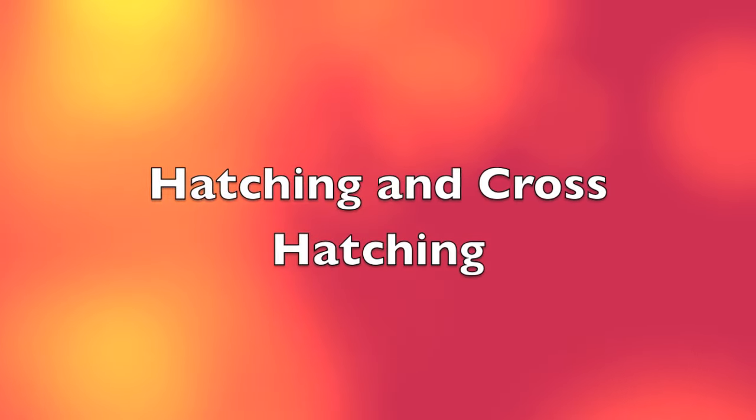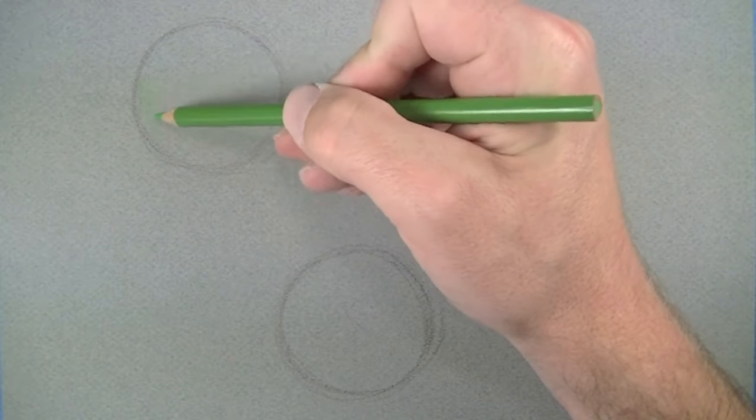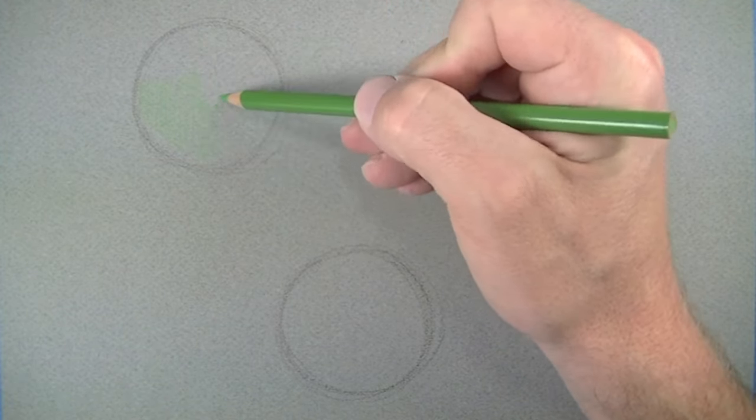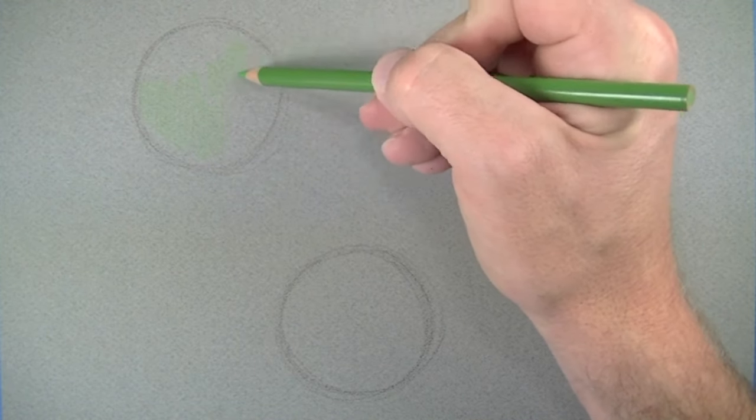Let's take a look at three different approaches to using colored pencils. The first one is using hatching and cross-hatching. Hatching is where the lines you make go in the same direction, and cross-hatching is where the lines cross over each other.